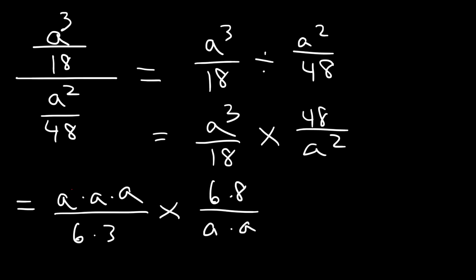So in this example, we can cancel 2 of the a variables. And we can get rid of a 6. So what we have left over is a times 8, or simply 8a. And on the bottom, we have a 3. And so that's the answer. 8a divided by 3.